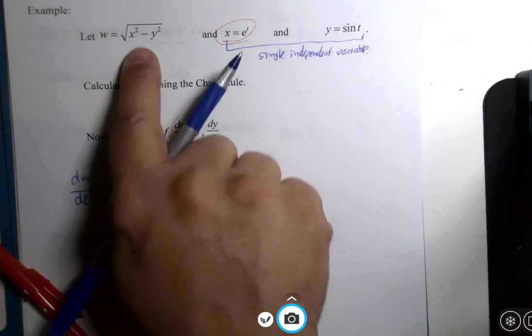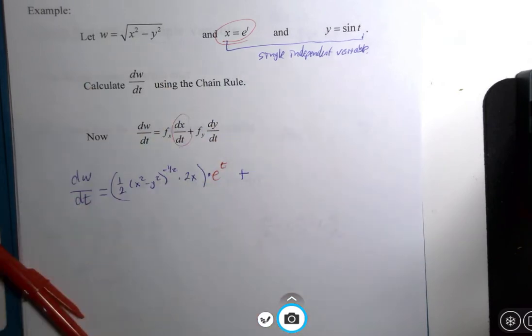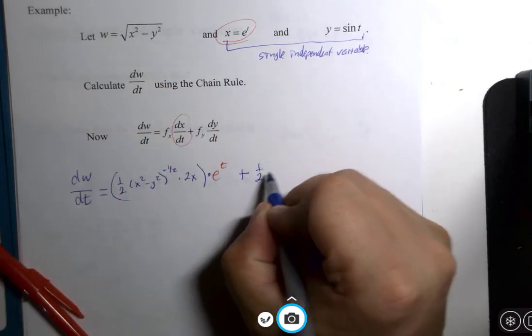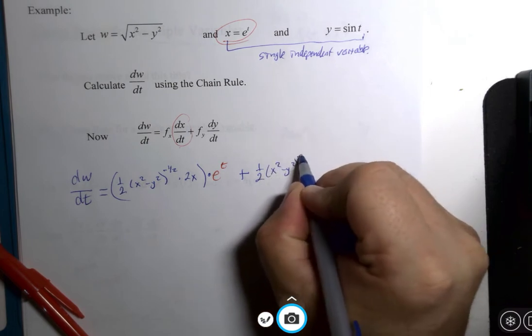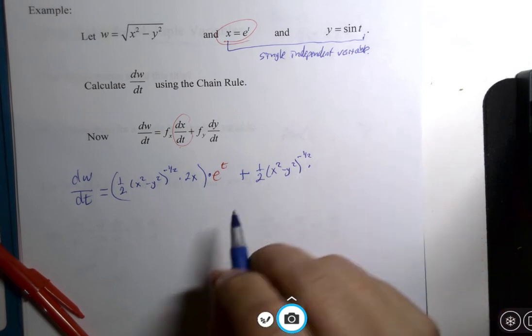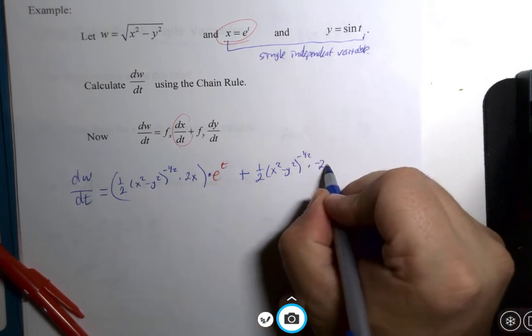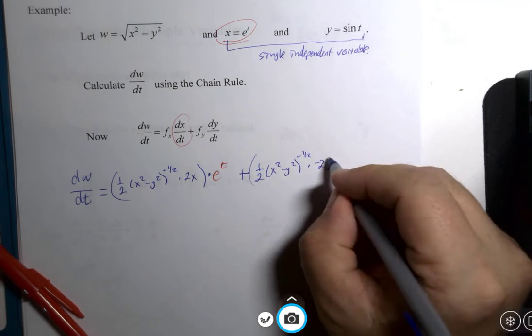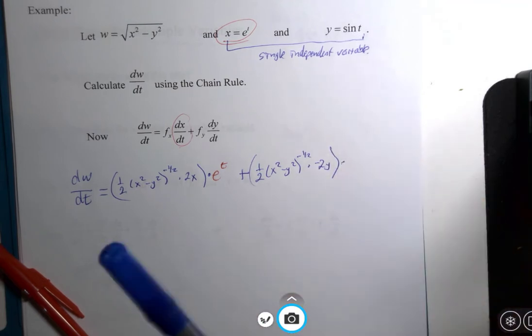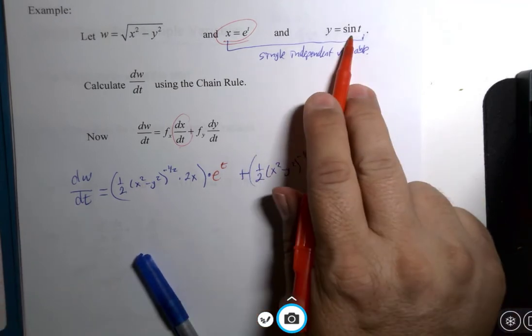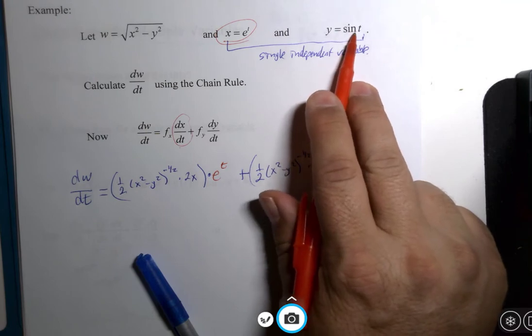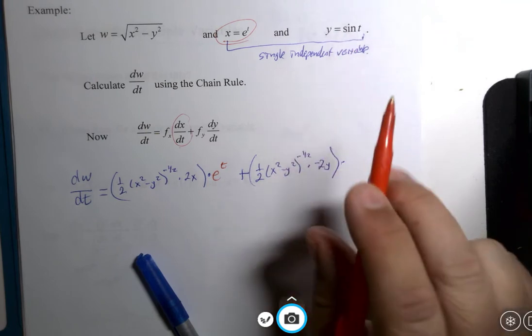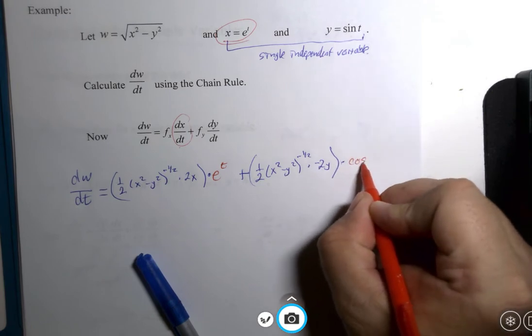What is the derivative of this if t is the variable? Well, that's a pretty simple derivative, e to the t power, so that's this right here, plus the y partial derivative of our original function, one half x squared minus y squared negative one half power multiplied by negative 2y, because y is the variable, times the y regular derivative here, because there's only one variable. The derivative with respect to t is cosine of t.